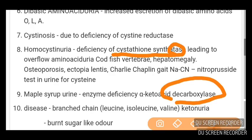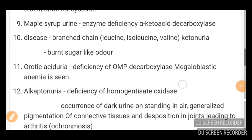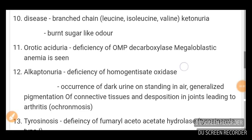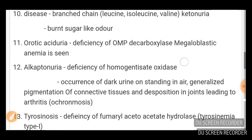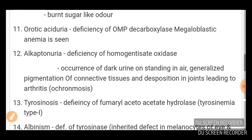Branched chain ketone urea has a feature of burnt sugar-like odor. Orotic aciduria is due to deficiency of OMP decarboxylase, and megaloblastic anemia is seen in this condition.